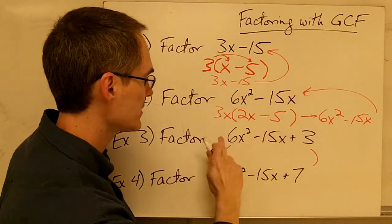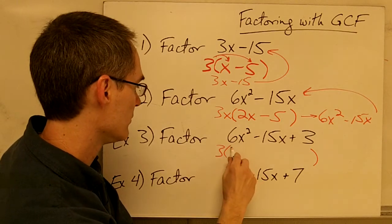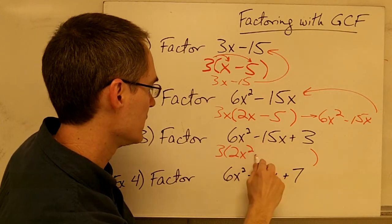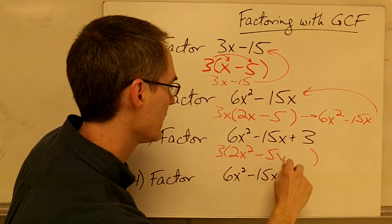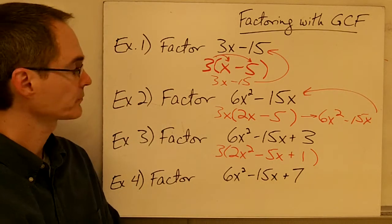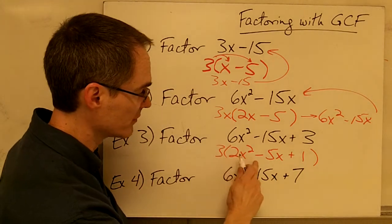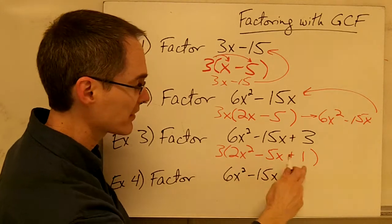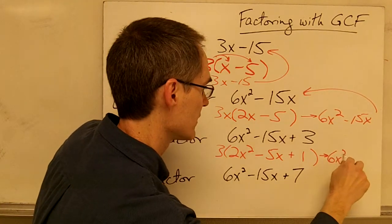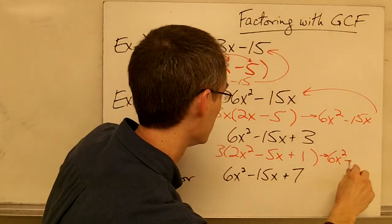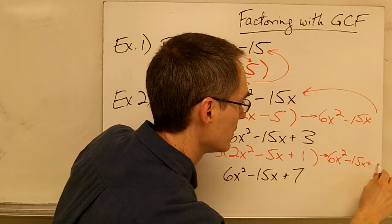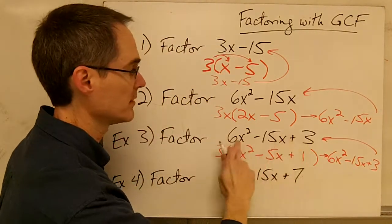If I pull a 3 out of this expression, that's going to leave me 2x squared from the first term. Pulling a 3 out of negative 15x leaves negative 5x. And pulling a 3 out of the last term leaves just positive 1. I can use the distributive property to check: 3 times 2x squared is 6x squared, 3 times negative 5x is negative 15x, and 3 times positive 1 is positive 3 — which is exactly the expression I started with.